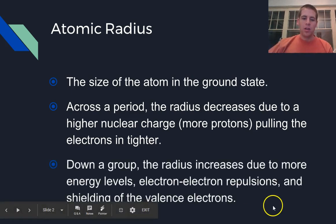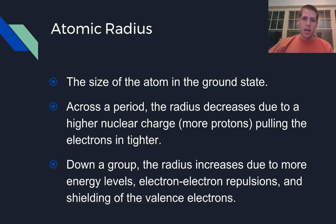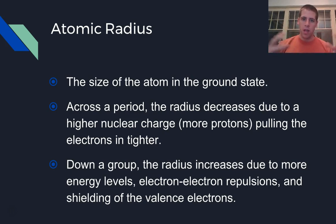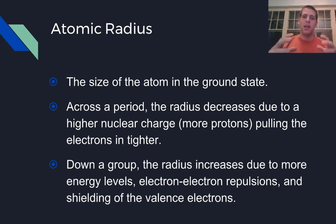As we go down a group on the periodic table, the radius of the atoms increases. This is due primarily to the fact that we're adding energy levels, which makes sense. If you think of the atom like an onion with multiple layers of electrons, for every layer that we add, it's going to increase the size of the atom.